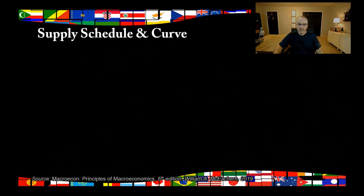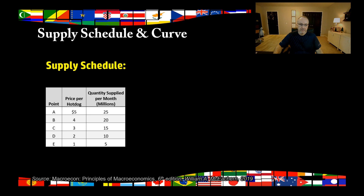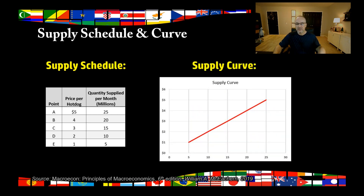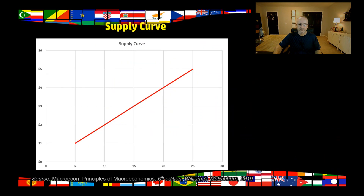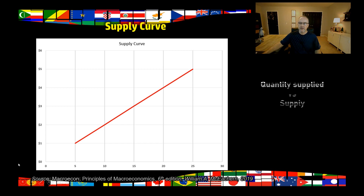Now let's look at the supply schedule and the supply curve. We've got prices of hot dogs and then the quantity supplied — and we can see it's the reverse of the demand. At five dollars I want to supply 25 million, but if you take me down to one dollar a hot dog, I only want to supply five. The supply curve goes up from bottom left to right, because if I can make more per hot dog as a producer, I'm willing to supply more. Five dollars yields 25 million hot dogs, and so on. That's pretty easy to understand.